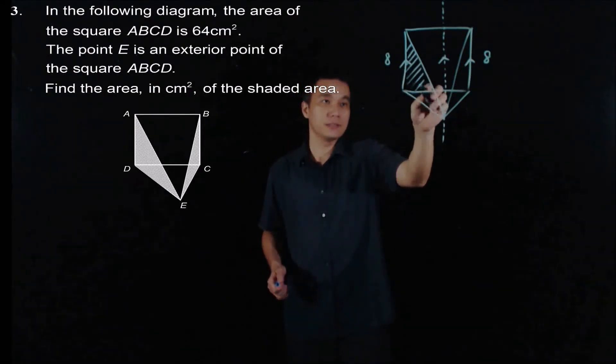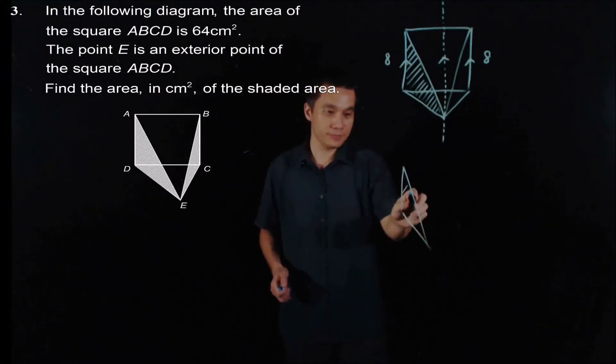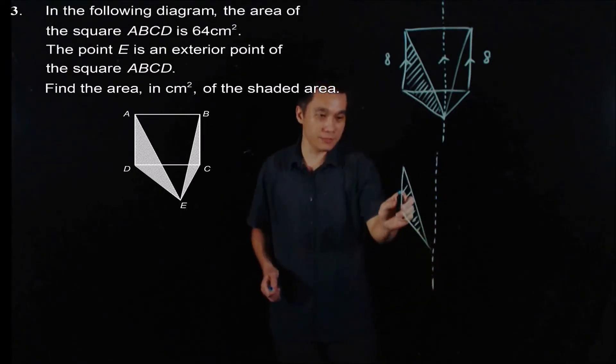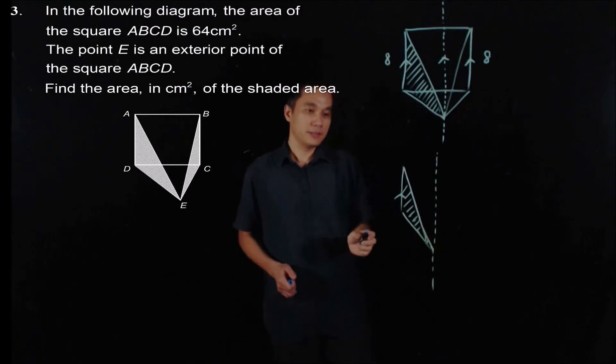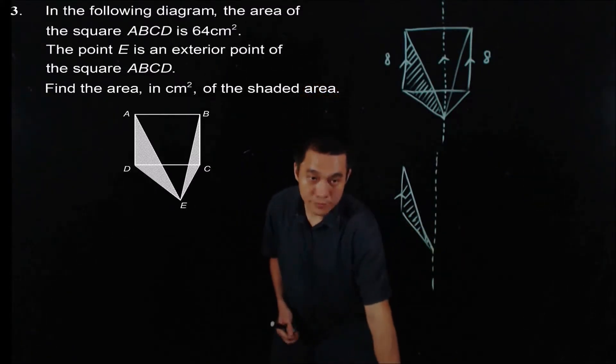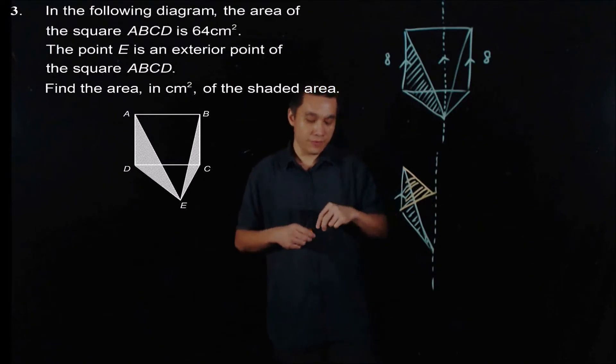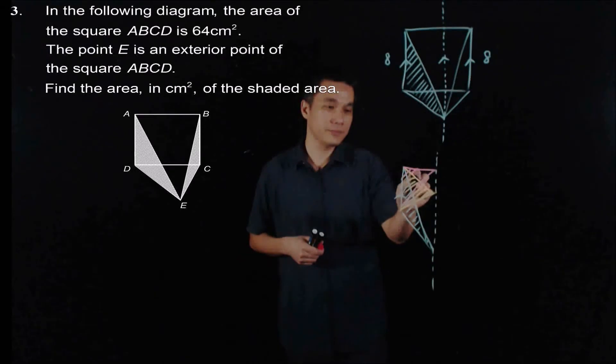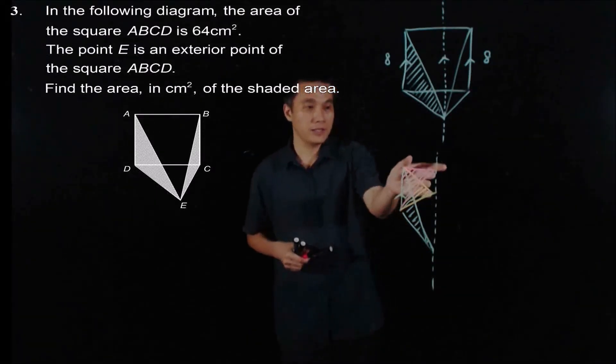Now, note that this one, this triangle, if we have some line that is parallel to this and touch this here, then we can conclude that the area of this triangle is equal to the area of this triangle. And in fact, it is also the area of that triangle. They are all the same because they have the same base and the same height.